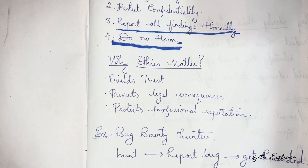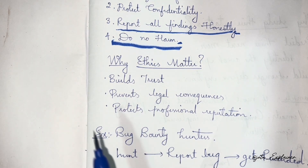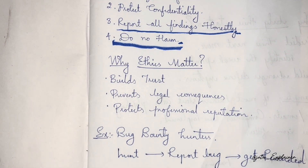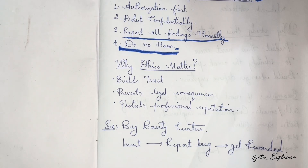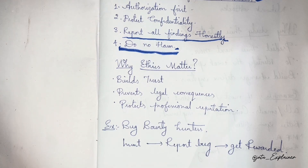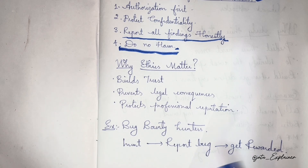If I work with you in an ethical manner, you can prevent legal consequences. The last reason is that it protects professional reputation — it keeps the reputation of a professional intact. A great example is bug bounty hunters, who ethically find vulnerabilities in an organization, report them, and get rewarded in return. With this we end our first topic on why ethics are important in ethical hacking.